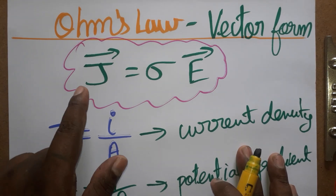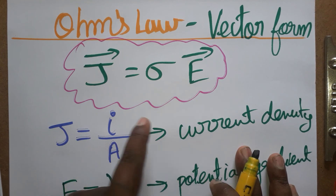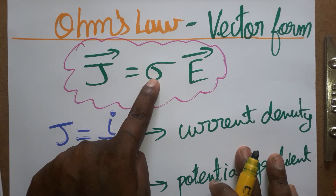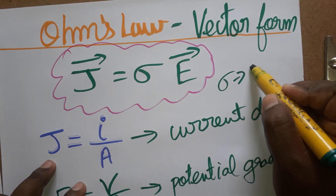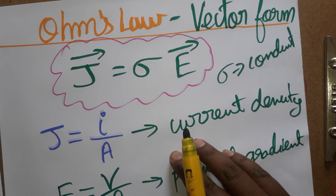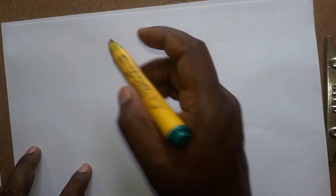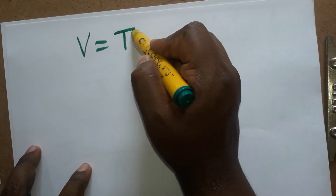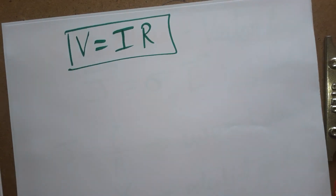Now we are going to prove that current density J equals sigma times electric field E, where sigma is the conductivity. This is the equation we are going to prove. We already know Ohm's law: V = IR, which is the macroscopic form. Today we are going to derive it in vector form.